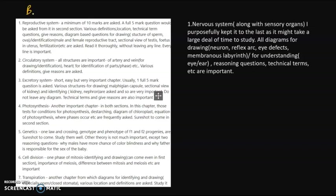Now for biology. For reproductive system, a minimum of 10 marks are asked and a full 5 mark question would be asked. You can just have a look at various definitions, location, technical terms, the reasoning diagram based questions. Then circulatory system, all structures are important, artery, vein and which carries the oxygenated blood and so on. Questions like the heart for identification of parts. Excretory system, short, easy and it has various structures that are very important. Like malfunction, capsule of kidney, nephron and so on.